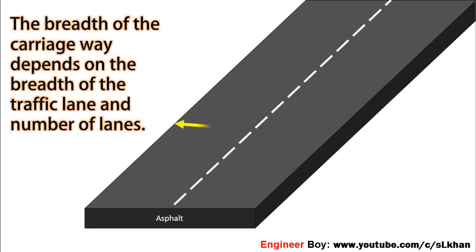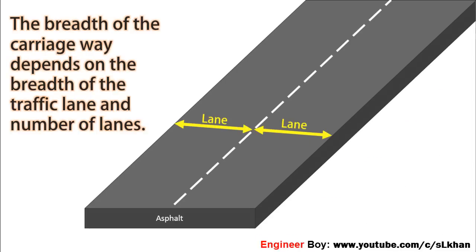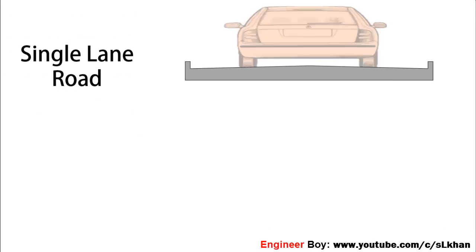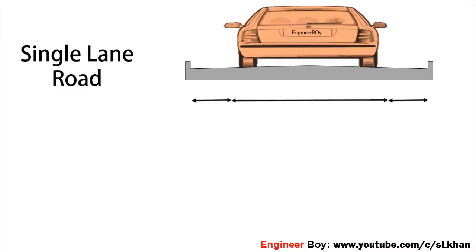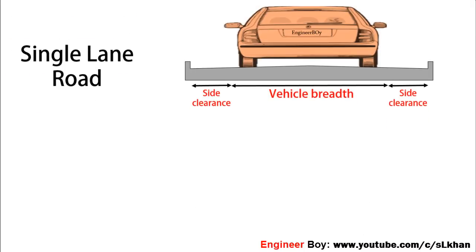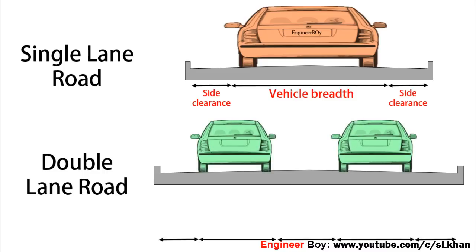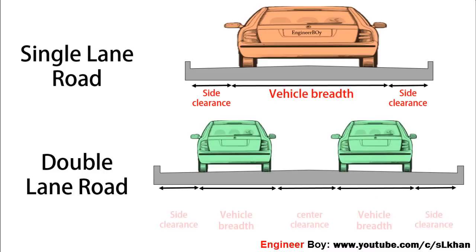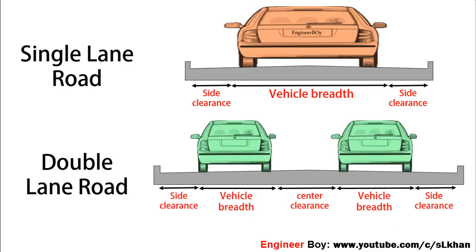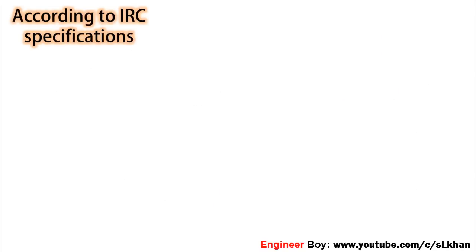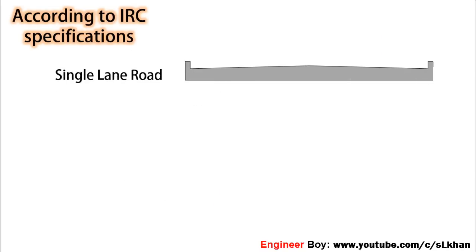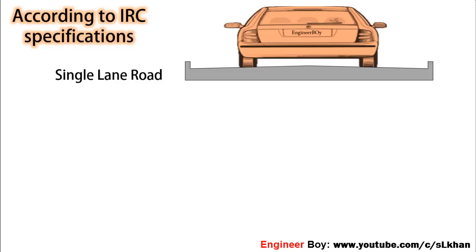The breadth of carriageway depends on the breadth of the traffic lane and the number of lanes. Similarly, the breadth of a traffic lane depends on the breadth of the vehicle and clearance at the sides and at the center of the roadway, because side and center clearance improves the operating speed and safety of road traffic.